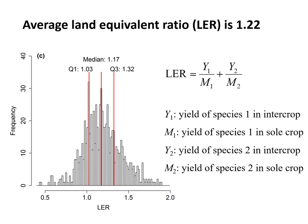When Yu Yang did this study, the histogram showed that the median value for the land equivalent ratio was 1.17, the average was 1.22 — slightly higher than the median. Fifty percent of values were between 1.03 and 1.32. About 75% of values were bigger than 1, but also about 25% were less than 1. So not all intercropping is great, but a lot of it is good.